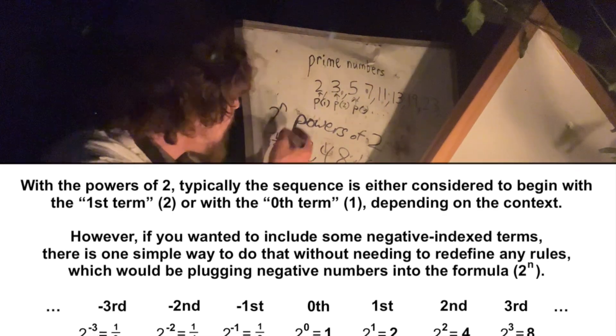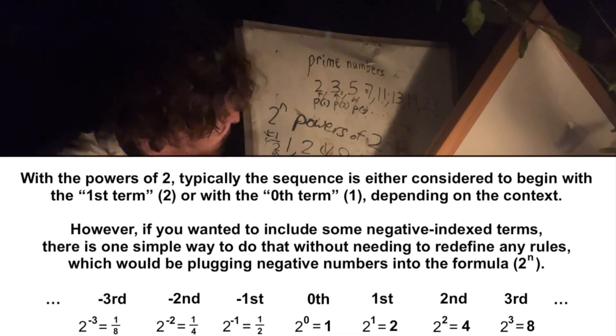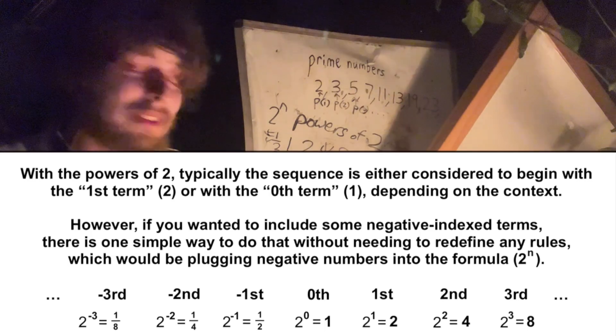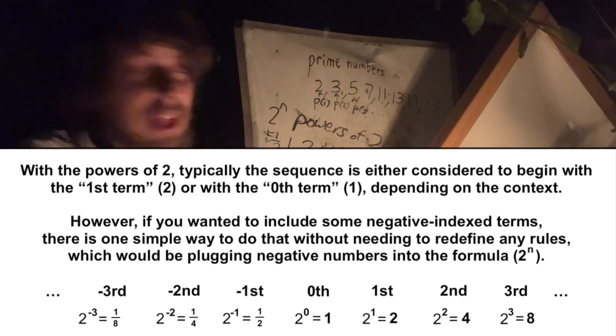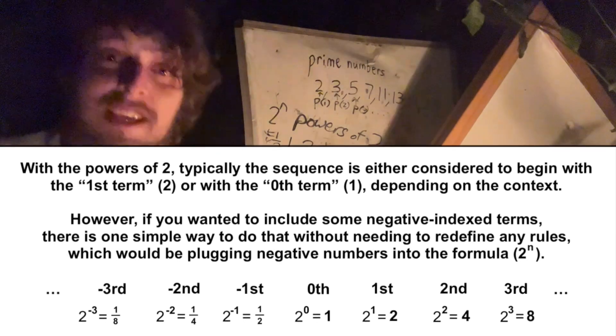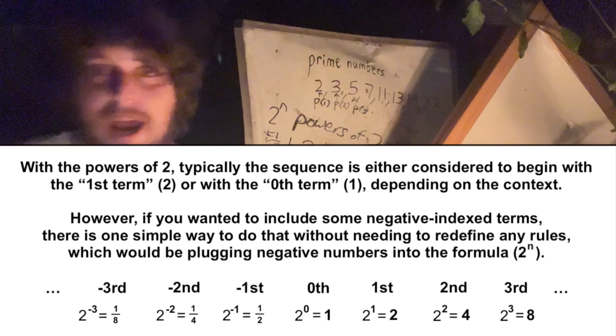The negative second power, which would be one-fourth, one-half, and then some of the more expected cases. So, this does have sensible terms to line up with the negative indices, even if they aren't always included in a list of the powers of two.